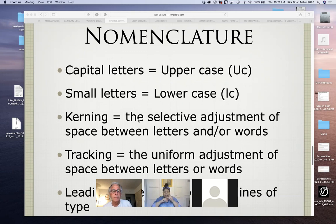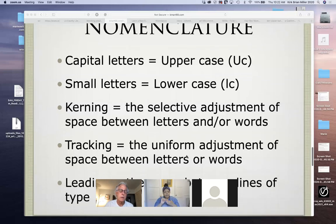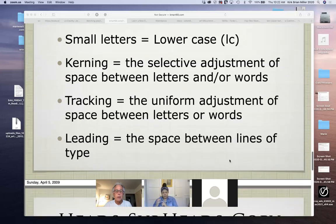As I showed you yesterday, the selective spacing between letters, individual letters and words, is called kerning. And I showed you the tool for that. So that's a very important term that's used in typography. And I also showed you the tool within the type tool that allows you to use tracking, which is the uniform adjustment of space between letters and words, not just between individual letters, but between could be an entire line of type. And then the last term that I talked about yesterday too, was the leading. And that's the space between lines of type.